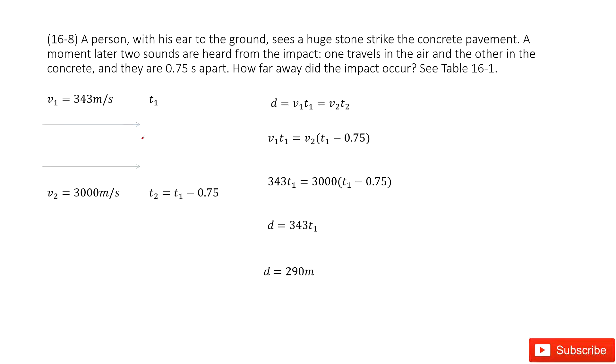So for this case, we have a look at one sound wave that travels in two different ways. First, it travels in air and the speed of the wave in air is given as 343 meters per second. The time taken is t1.